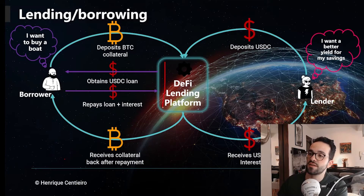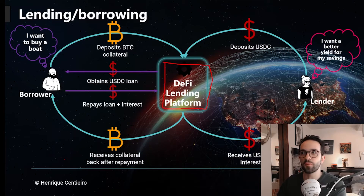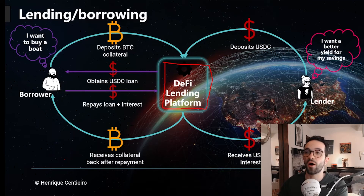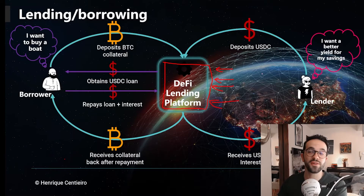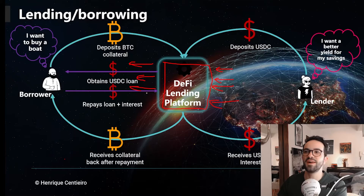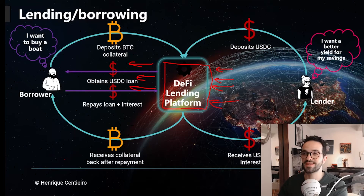By the way, this DeFi lending protocol — whether Aave, Compound, or others — is not peer-to-peer lending. So Alice is not lending directly to Bob. It's lending to a pool, and you have many, many people depositing into this pool, depositing different amounts of USDC. And you have many people getting loans and depositing collaterals — this is how the risk is spread.